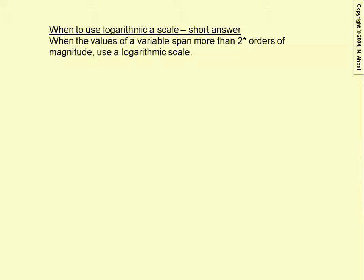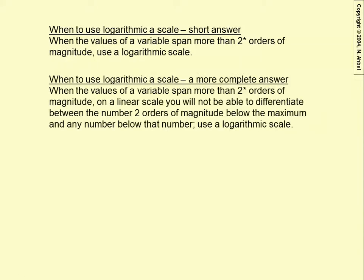An order of magnitude is when you multiply or divide by 10. Every time you multiply by 10, you're going up an order of magnitude. Every time you divide by 10, you're going down an order of magnitude. And this is just a rule of thumb — the two orders of magnitude. So here's the longer and more complete answer.